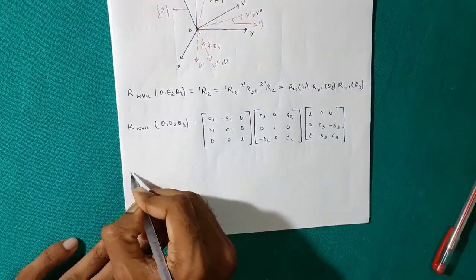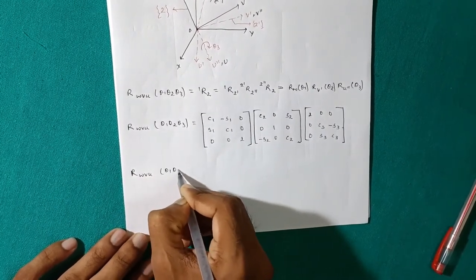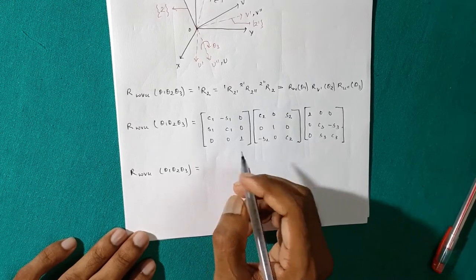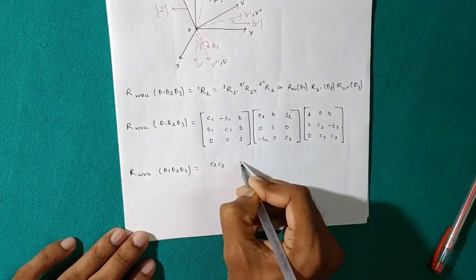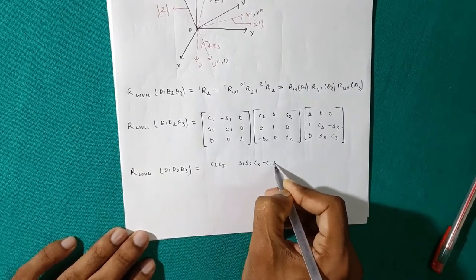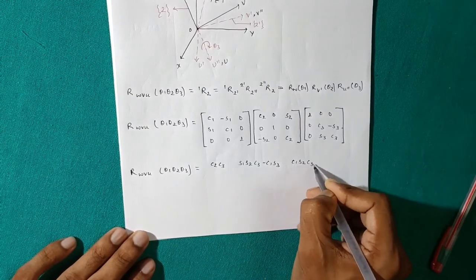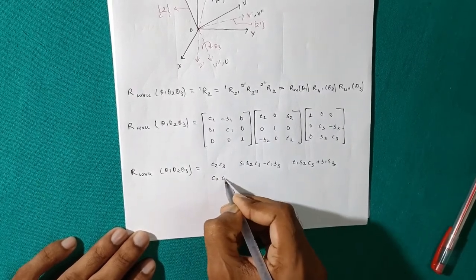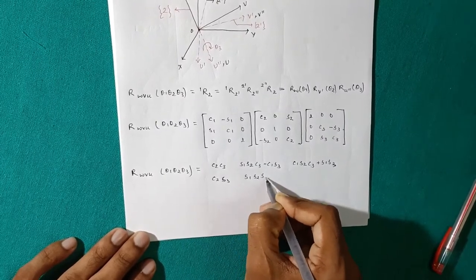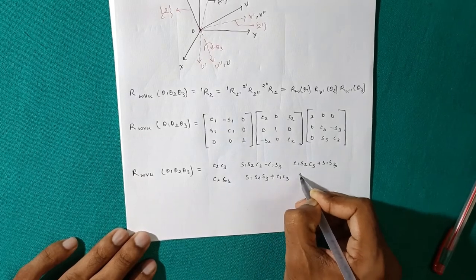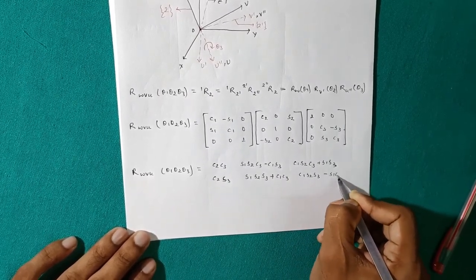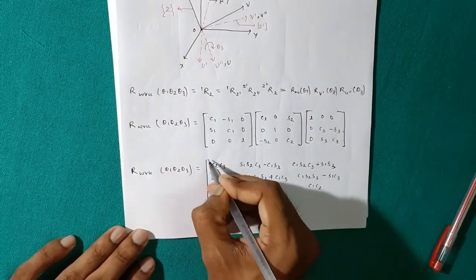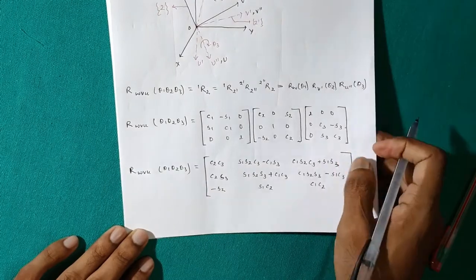And the final expression will be R_WVU theta1, theta2, theta3. I am writing the final expression, you can multiply it step by step. So the final expression will be: C2*C3, S1*S2*C3 - C1*S3, C1*S2*C3 + S1*S3; C2*S3, S1*S2*S3 + C1*C3, C1*S2*S3 - S1*C3; -S2, S1*C2, C1*C2. So this is the final expression for rotation matrix in Euler angle representation.